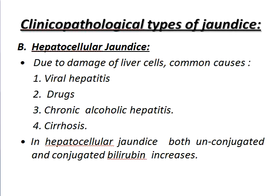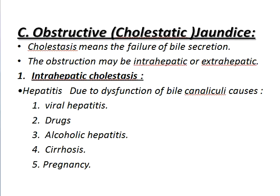Number two: in hepatocellular jaundice, both unconjugated and conjugated bilirubin are increased. Number three: obstructive or cholestatic jaundice. Cholestatic means failure of bile secretion. The obstruction may be intra-hepatic or extra-hepatic. Now about intra-hepatic cholestasis — hepatitis due to dysfunction of bile canaliculi.